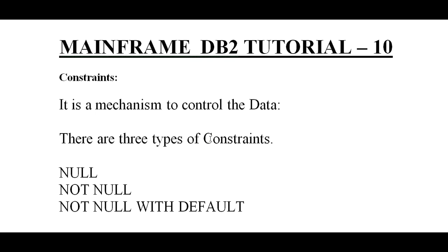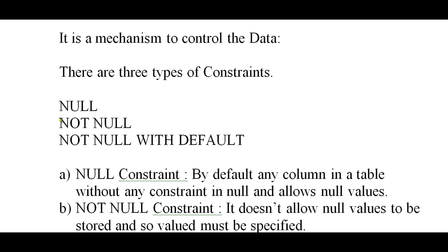So what is a constraint? A constraint is a mechanism to control the data. Based on this, we have three types of constraint: null, not null, and not null with default. By default, any column in a table without any constraint is said to be null — that is, it can allow null values.